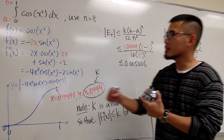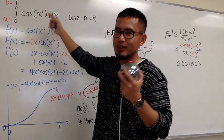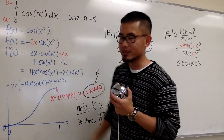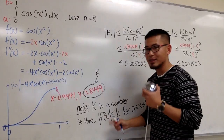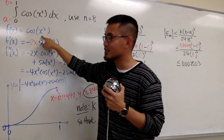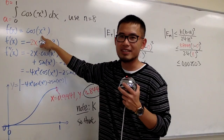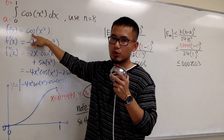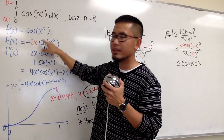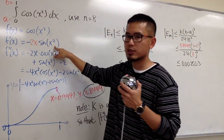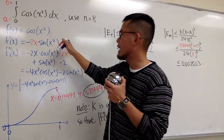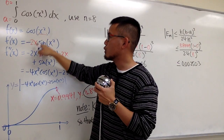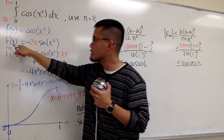Let me show you how to find the maximum of the absolute value of the second derivative. Here is our function: cosine of x squared. We need to differentiate it twice to get the second derivative. For the first derivative, the derivative of cosine is negative sine, the input stays the same as x squared, and by the chain rule we multiply by the derivative of x squared, which is 2x.